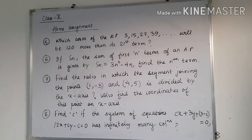Number 7: Find the ratio in which the segment joining the points (1, -3) and (4, 5) is divided by the x-axis. Also find the coordinates of this point on the x-axis.